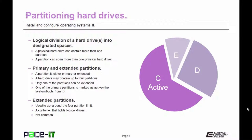Only one of those partitions can be extended. One of the primary partitions is marked as active — that's where the system boots. An extended partition is used to get around the four partition limit. It acts as a container to hold logical drives. It's not very common anymore, but it was a way to get around the four partition limit.